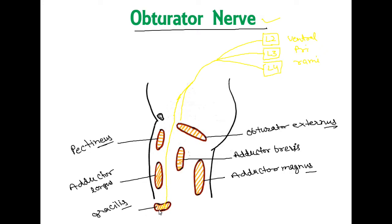The anterior division supplies the gracilis and the following muscles: pectineus, adductor longus, gracilis, and adductor brevis — if the adductor brevis is not supplied by the posterior division.